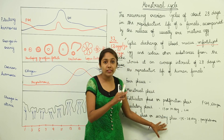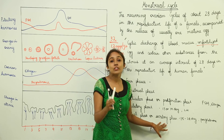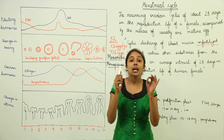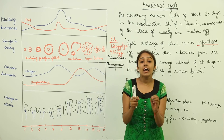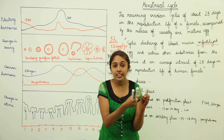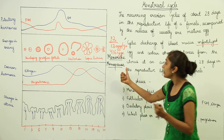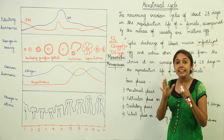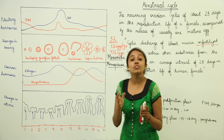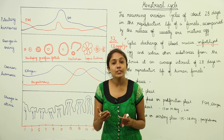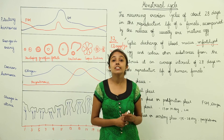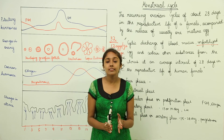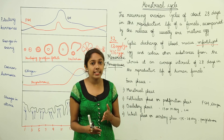During pregnancy, there is no menstrual cycle. The menstrual cycle takes place from puberty until menopause — from menarche to menopause — and if pregnancy occurs during that period, the menstrual cycle is absent.